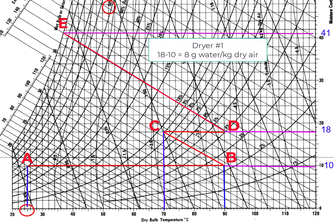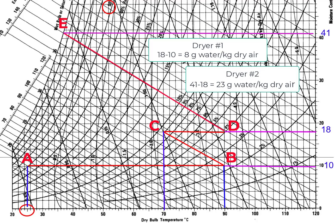The moisture removed in the first dryer is 18 minus 10, so 8 grams of water per kilogram of dry air. For the second dryer it will be 41 minus 18, which is 23 grams of water per kilogram of dry air. Those are the answers for this problem.